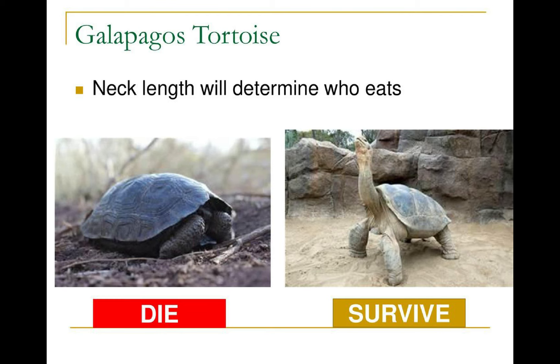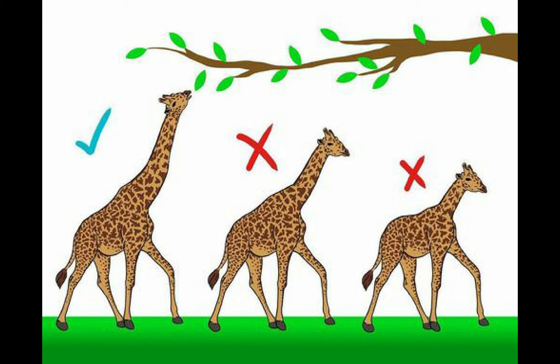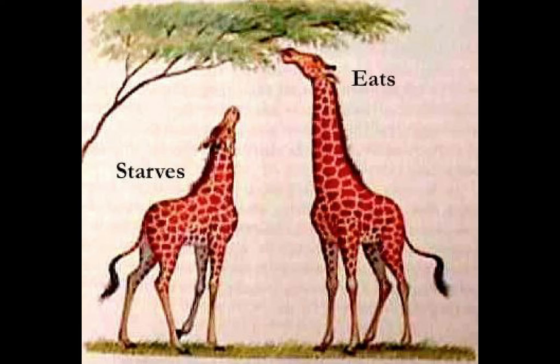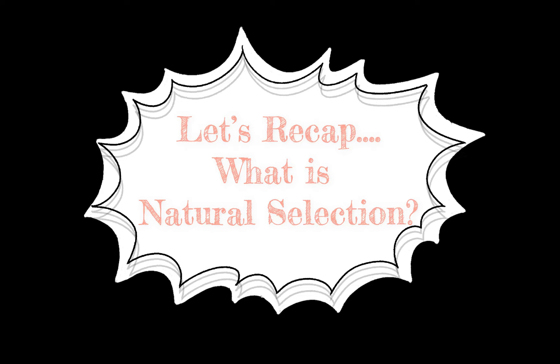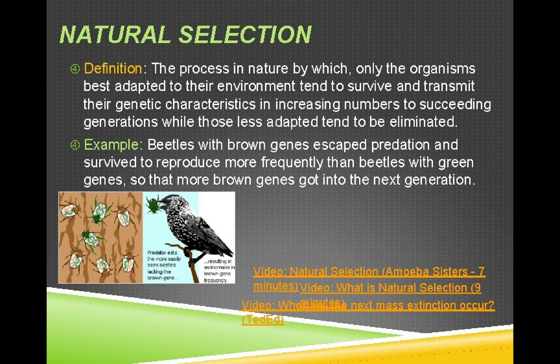In this way, the characteristics of a population gradually change over a long period of time — and that is what Darwin's theory of natural selection explains. Natural selection is when animals and plants develop characteristics that give them a better chance of survival.